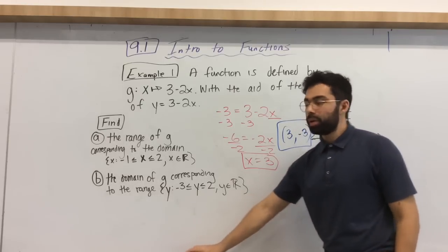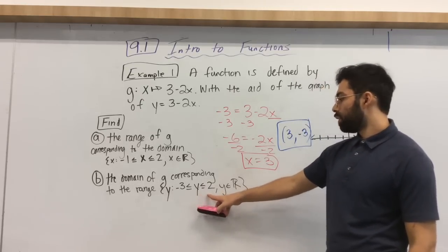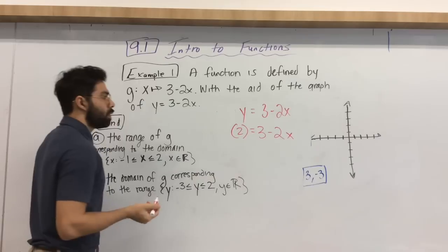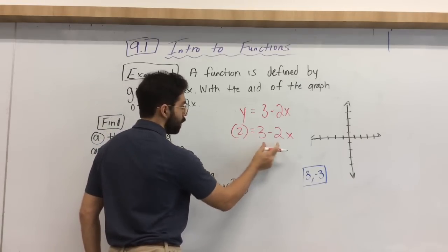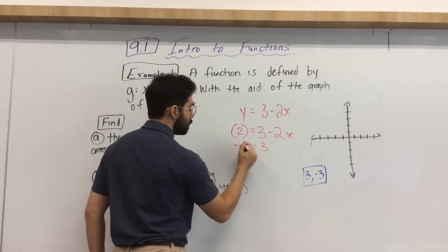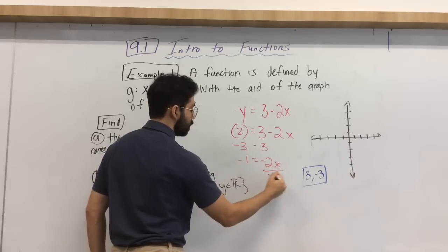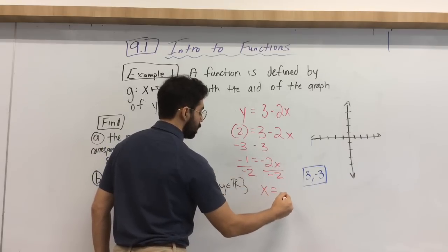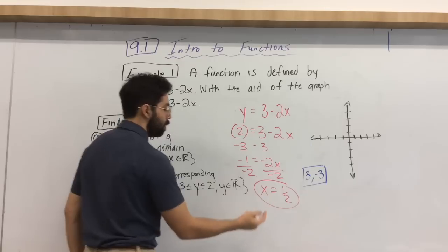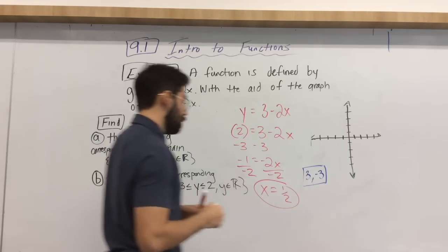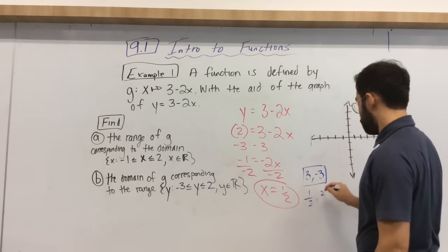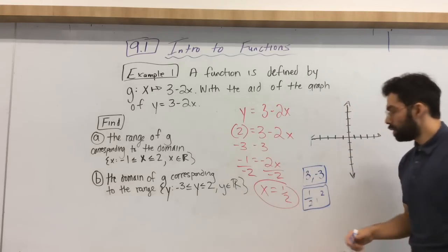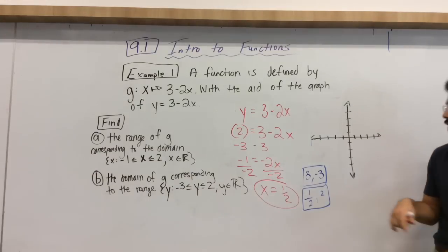Okay? Let's go ahead and do our second scenario, which says our output is 2. All right? So for our second scenario, our output, our range is 2. Let's go ahead and solve for our x. Okay? Our input, again, is 1 half. And our output was 2.